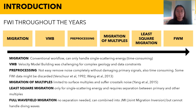Pre-processing has always been in the workflow, but removing noise completely is not always an easy task since some of the primary signals might be removed. In the case of FWI, some of the data needed might be discarded during pre-processing, as stated by Varsher et al. in 1992 and Huang et al. in 2013. Migration of multiples, on the other hand, is limited to surface multiples only, and Yang et al. in 2015 stated that it also suffered from crosstalk noise.